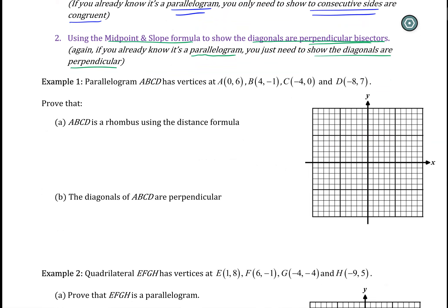Let's look at example number one. Notice they do tell me it's a parallelogram, so that's good. Let's plot our points here. We've got A at (0, 6), B at (4, -1), C at (-4, 0), and D at (-8, 7). Let's use our straight edge, connect the dots, and get ourselves a visual picture of what we're looking for.